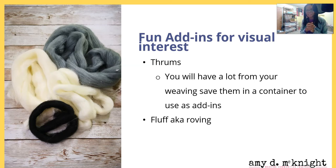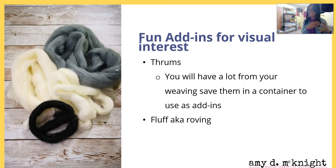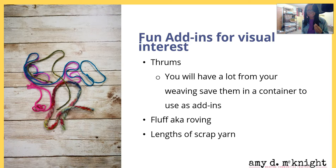Other things you can use are fluff, also known as roving. These are super fun, especially when you're doing decorative pillows or wall hangings. This may not be something you want to use a lot in something that's going to be worn or washed frequently, because it may not wear great. But for decorative pieces that won't get much wash or wear, fluff is a great add-in. You may have some roving left over from the arm-knitting or hand-crocheting phase, or if you're a spinner you may have some as well. Last but not least, lengths of scrap yarn can also be added in at various places in the weaving and offer their own visual interest and effects.